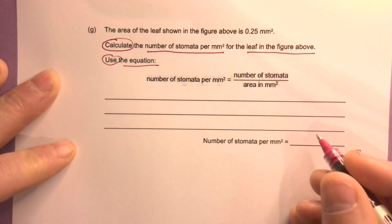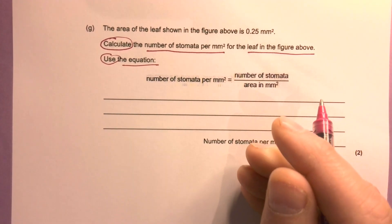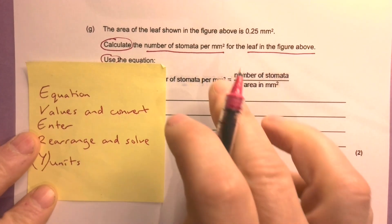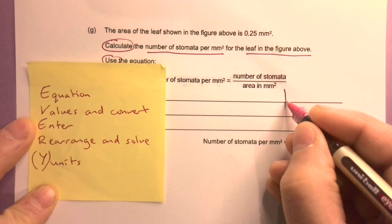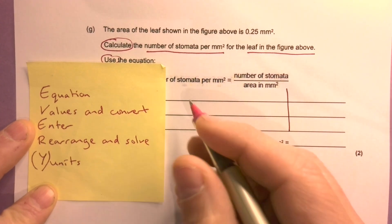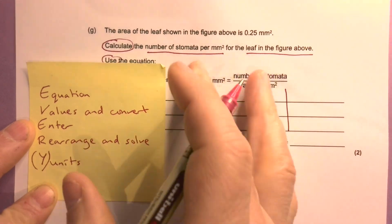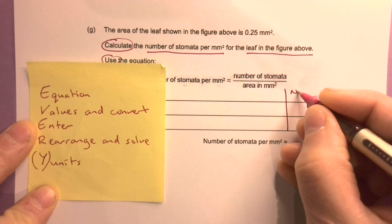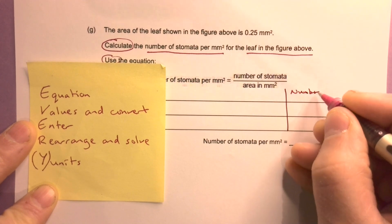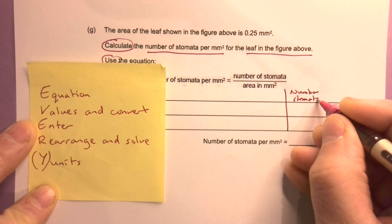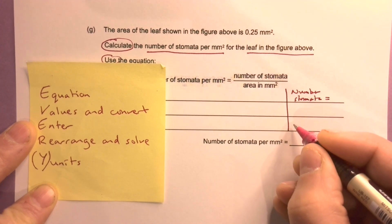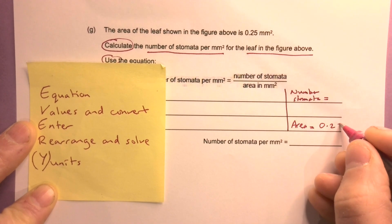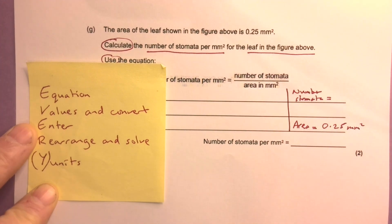Okay, so we've got the equation that we need to use. What are my values? I'm going to put a line down here. I need to work out the number of stomata per millimetre squared. I'll count those in a second. The area is 0.25mm squared, so I know the area already.